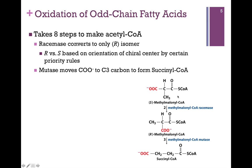The product of that previous reaction was a racemic mix of methylmalonyl-CoA, so now we need a racemase to convert them all to the R isomer. R and S are similar to D and L — there are certain priority rules for classifying them, but we simply need this racemase to convert it all to the same chiral form.